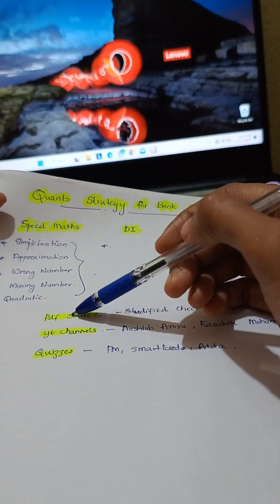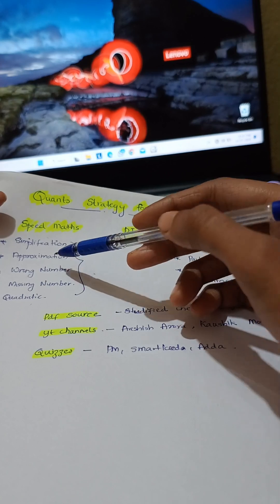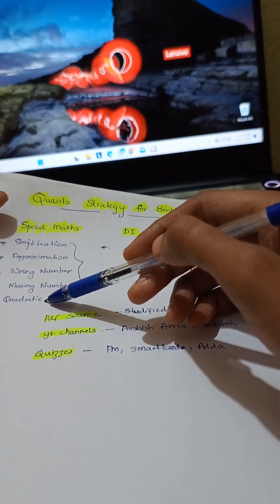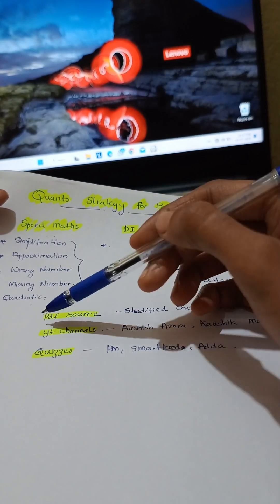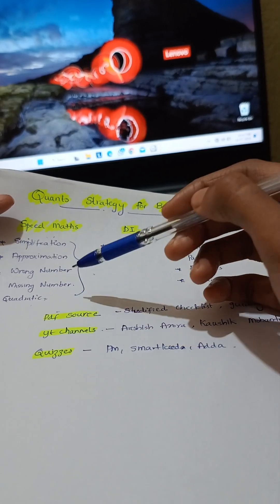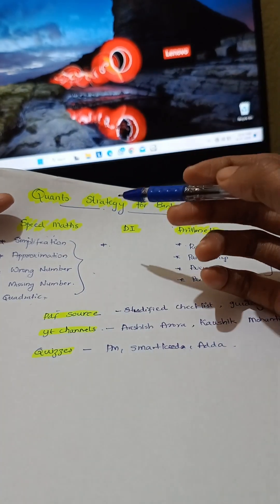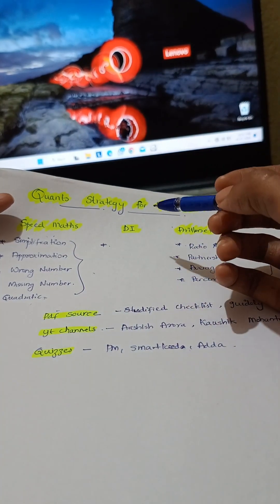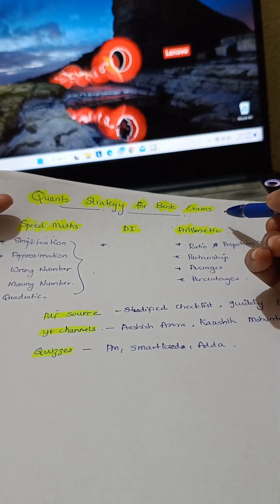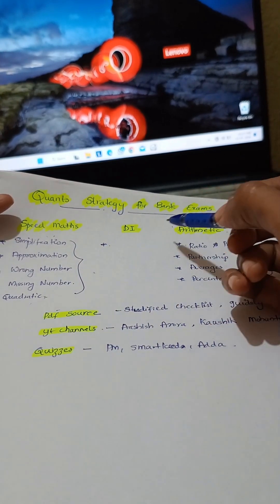Speedmax mainly consists of simplification, approximation, wrong number, missing number, and quadratic. These Speedmax topics can definitely help to improve your marks in your bank exams. That is for pre-level exams.